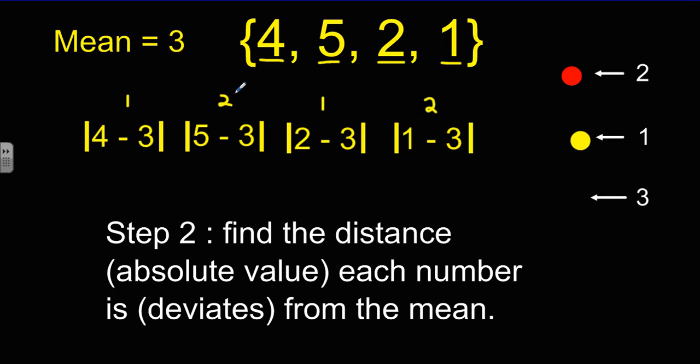Now, these all represent distances. The distance that each number in the set is from the mean. The next thing we need to do is add those distances together. So 1 plus 2 is 3, plus 1 is 4, plus 2 is 6. So we get 6.